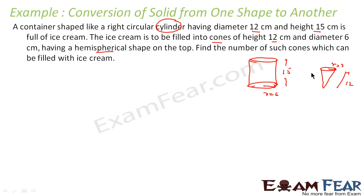Not only this, it is having a hemispherical shape on the top, and we have to find the number of such cones that can be filled. From this bigger one, we have to find the number of cones that can be filled. So we see the volume is constant. Let's suppose let there be n such small cones.